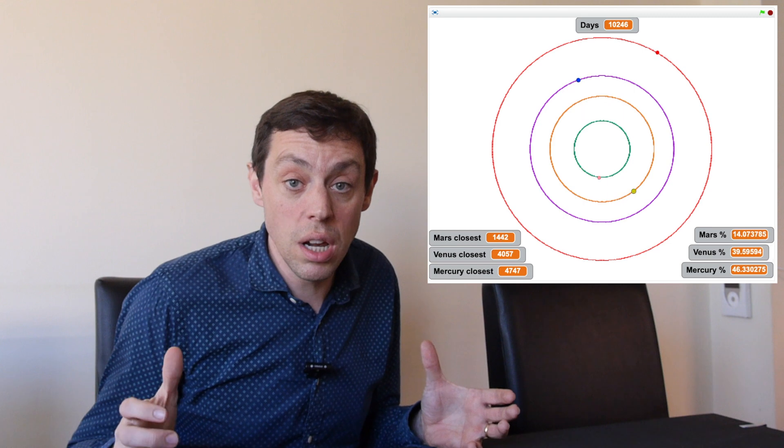So the answer to which is the closest planet to Earth? Well, on average, Mars is the closest 17% of the time, Venus is closest 36% of the time, but the closest planet to Earth, on average, 46% of the time, is Mercury.